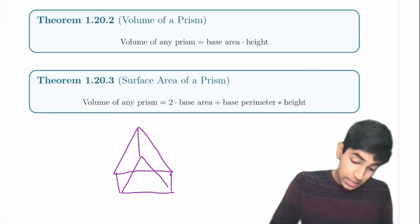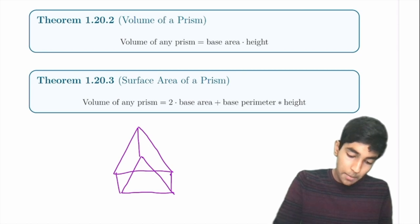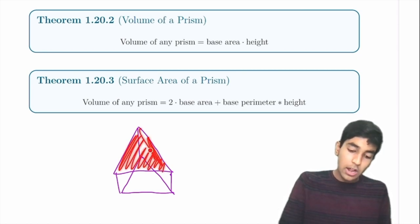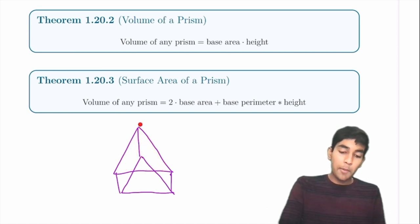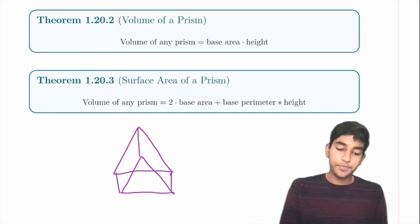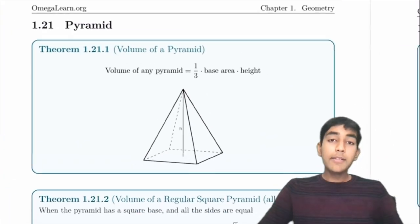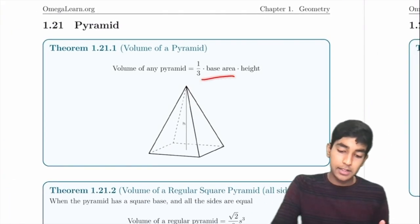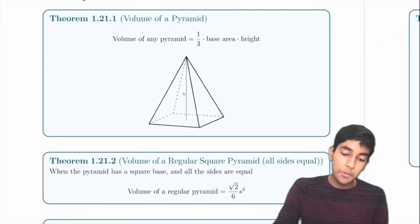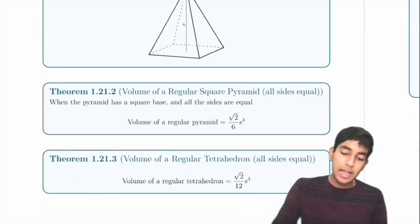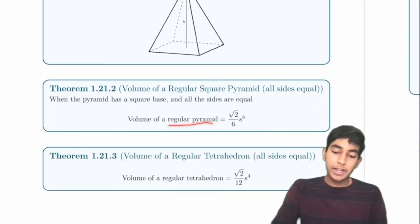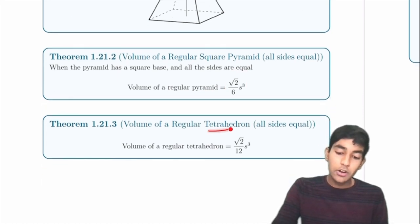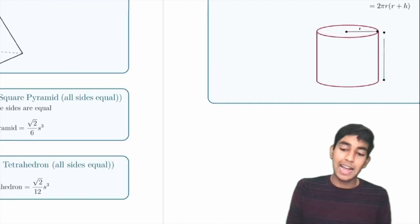For a pyramid, volume = (1/3) × base area × height. The volume of a regular square pyramid is (√2/6) × s³. The volume of a tetrahedron (a triangular pyramid) is (√2/12) × s³.